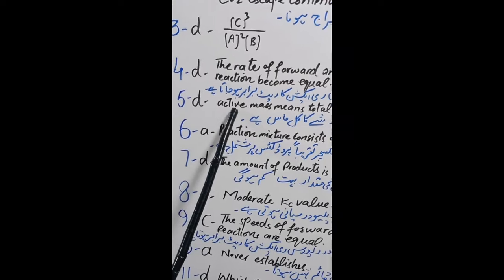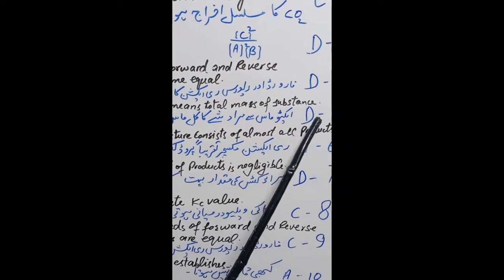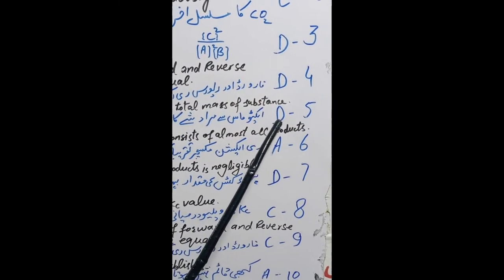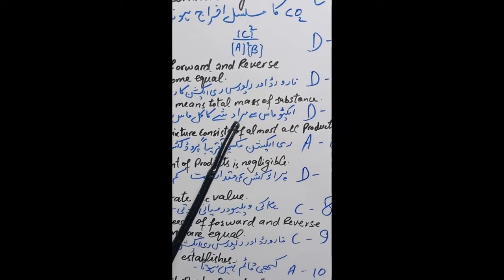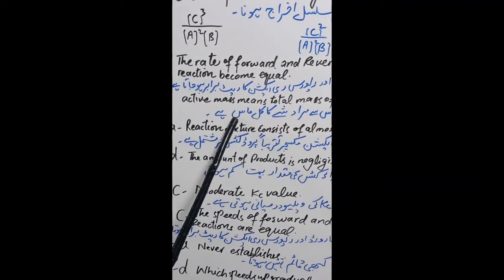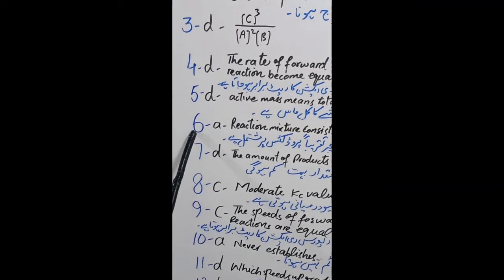Question 5: D. Active mass means total mass of substance. Answer D. Active mass se murad substance ka kul mass hai.